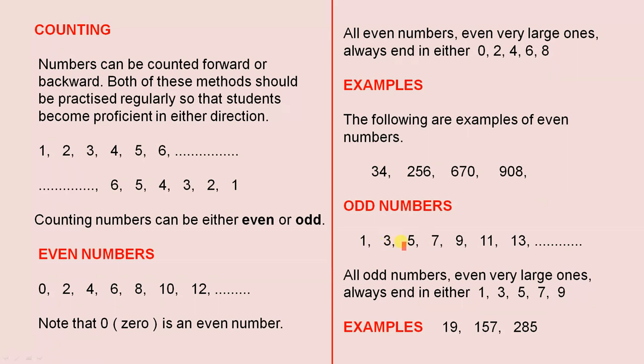The odd numbers: 1, 3, 5, 7, 9, 11, 13, etc., they continue on. All odd numbers, even very large ones, always end in either 1, 3, 5, 7, or 9. Examples: 19, 157, 285. They're all odd numbers.